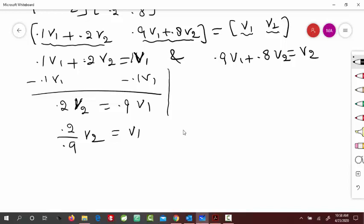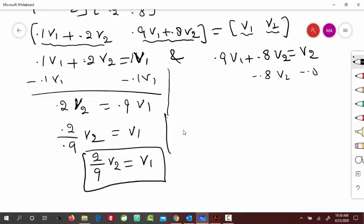And if you simplify it, that is 2/9 of V2 is equal to V1. So this is this equation. And if I simplify this, the other one, so subtract 0.8 V2 on both sides.